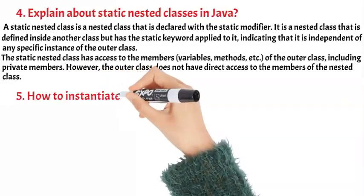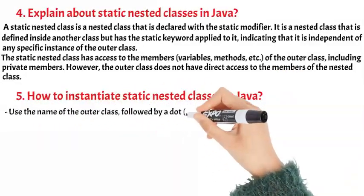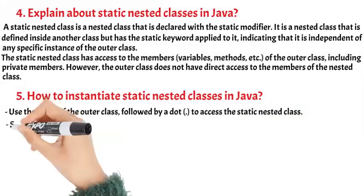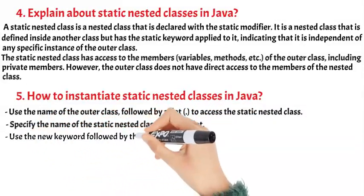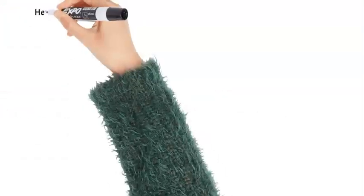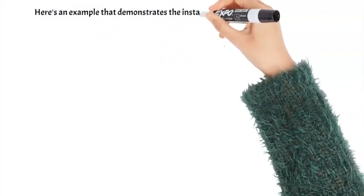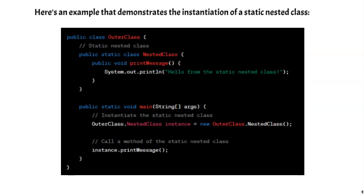How to instantiate static nested classes in Java: Use the new keyword followed by the class name and parentheses to create a new instance of the static nested class. In the example shown, the outer class contains a static nested class called NestedClass. Inside the main method, we instantiate the nested class using the OuterClass.NestedClass syntax. Then we call the printMessage method on the created instance.